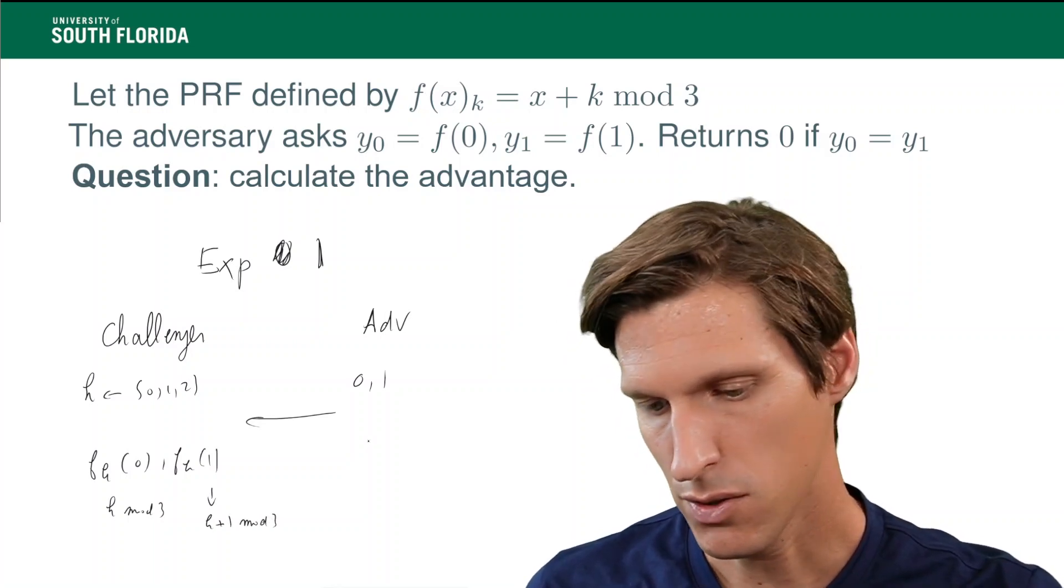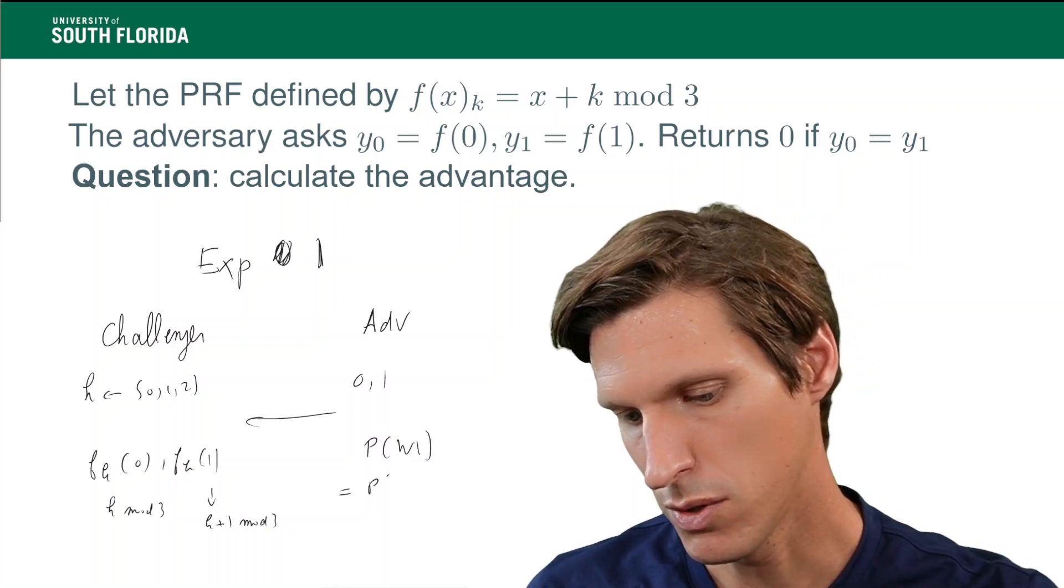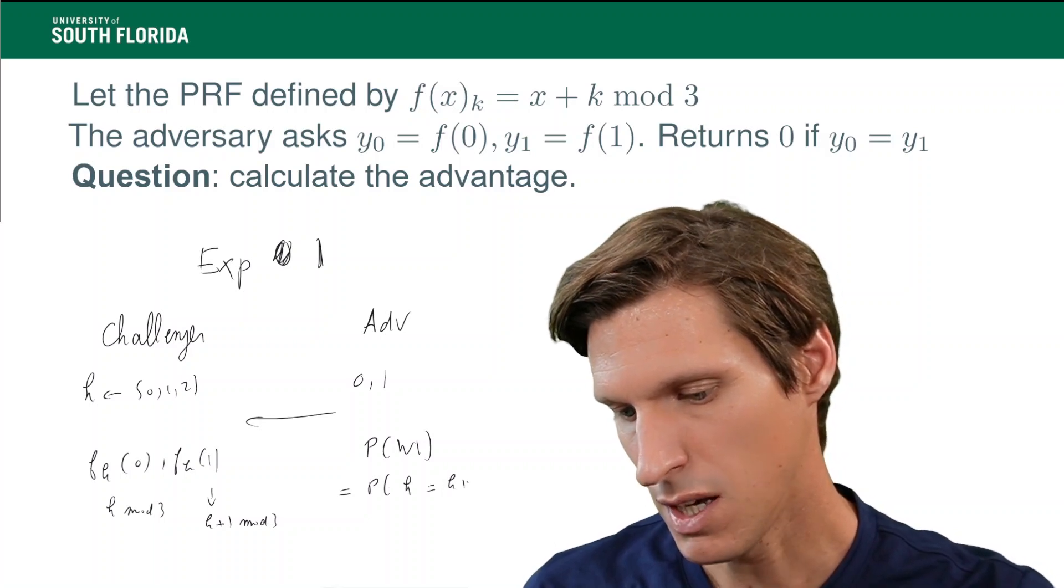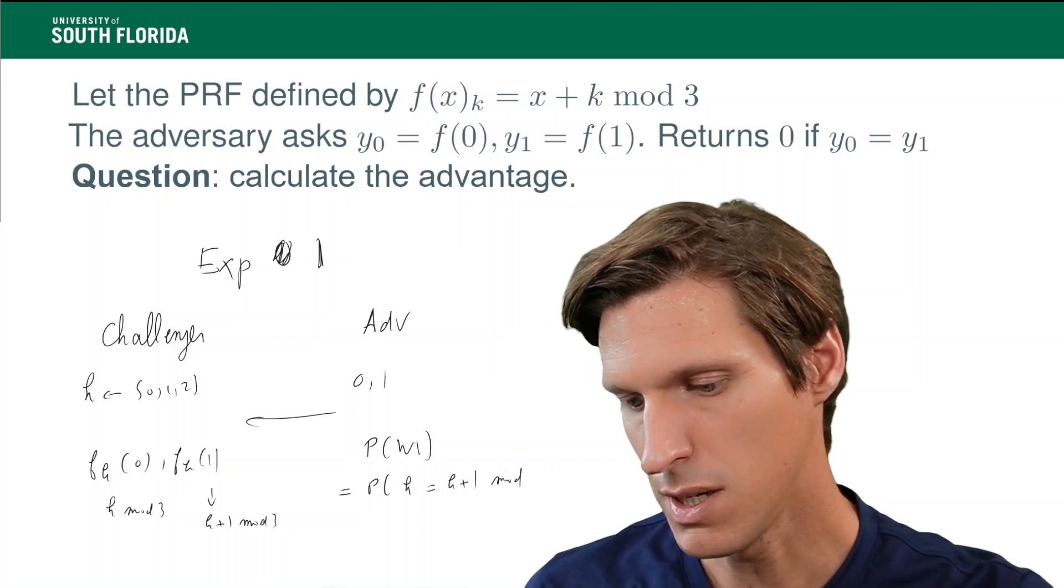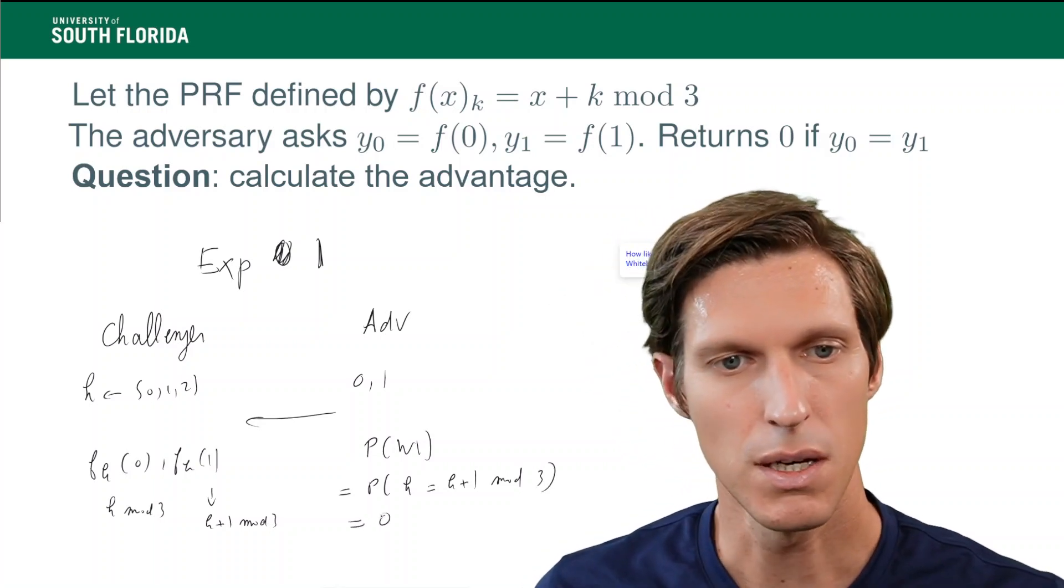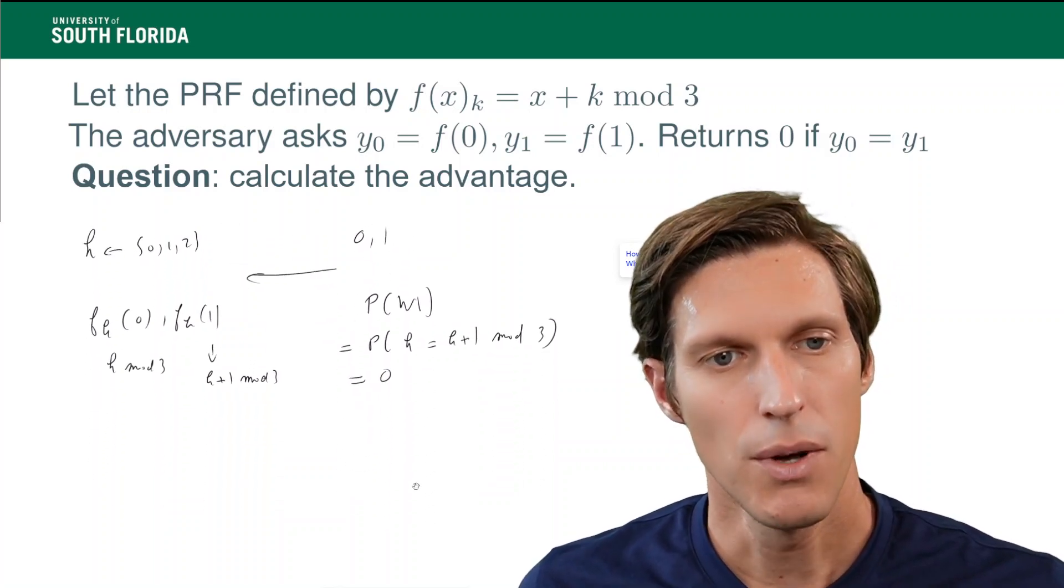And now, it turns out, so the probability of w1, which is the probability that k equals k plus 1 mod 3, this is basically 0. Because there is no way k equals k plus 1 mod 3.